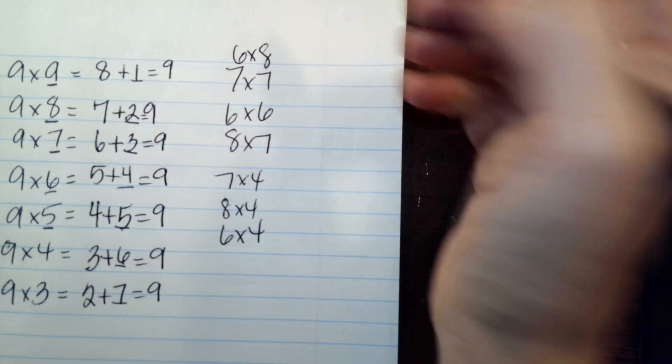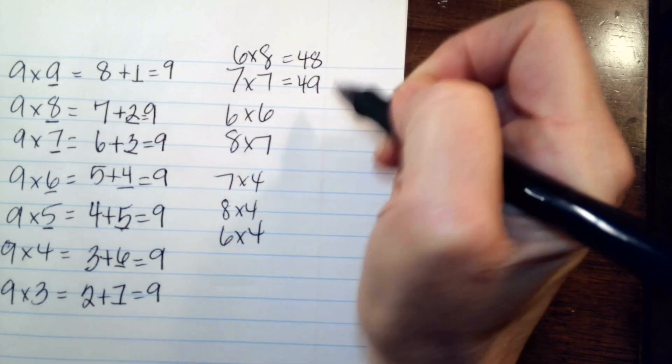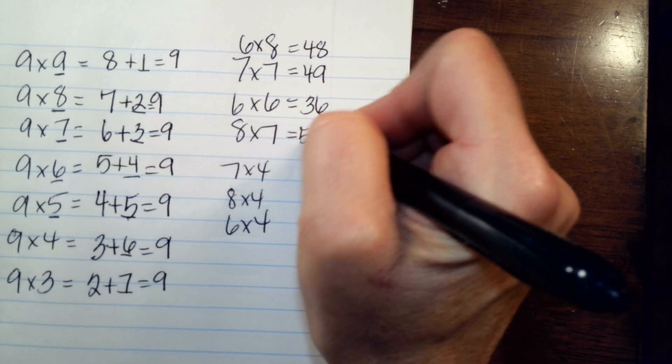Six times eight is forty-eight. Seven times seven is our football team, forty-nine. Six times six is thirty-six. And eight times seven is fifty-six.